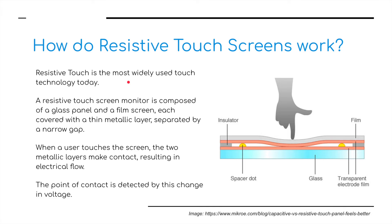As you can see in the diagram, you have to press down in order for the two electrode films to make contact with each other. A resistive touch screen monitor is composed of a glass panel and a film screen, each covered with a thin metallic layer separated by a narrow gap. When a user touches the screen, the two metallic layers make contact, resulting in electrical flow. The point of contact is detected by this change in voltage.